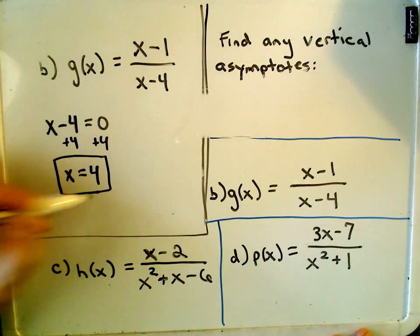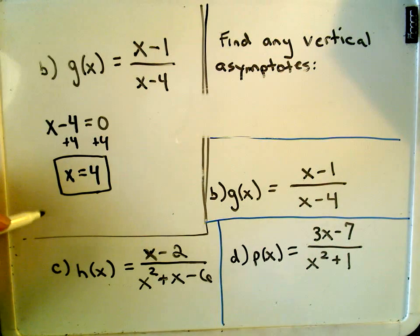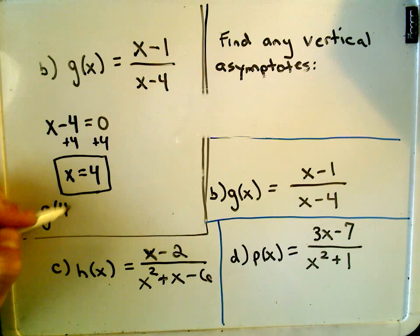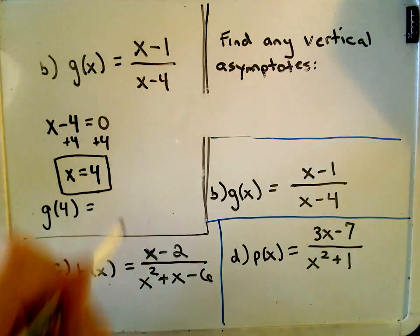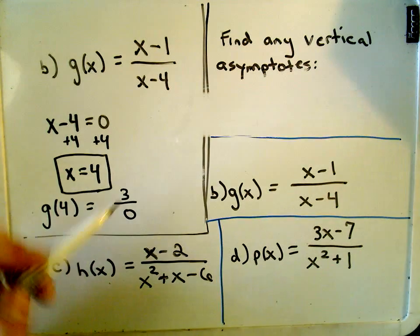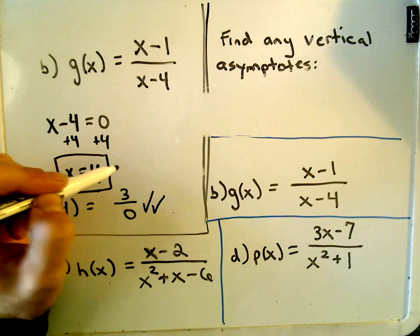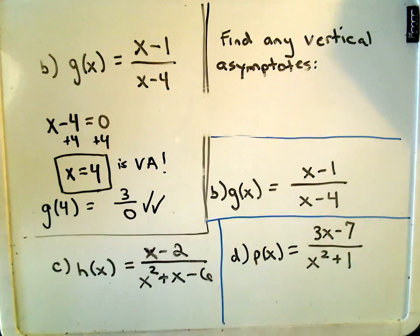So again, that's kind of my potential vertical asymptote. Notice if I plug it back into the original function. If I evaluate g of 4, well, in the numerator, we'll get 4 minus 1, which is 3. On the bottom, we get 0. We get something non-zero over 0. That means that this line, x equals 4, is a vertical asymptote.